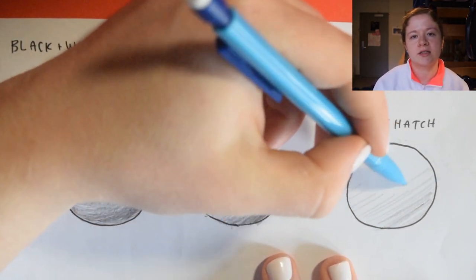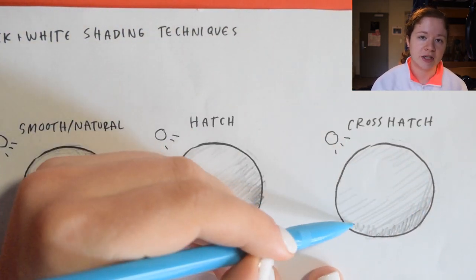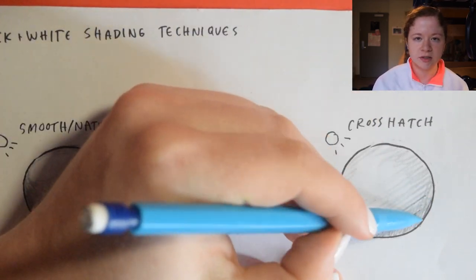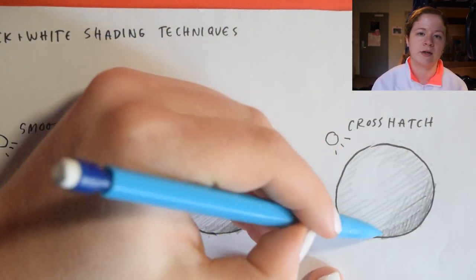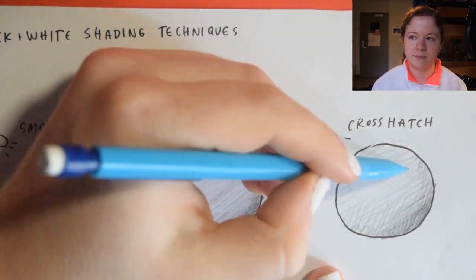And then our last example is crosshatch, which is also a really helpful technique. Basically, it's a lot like hatch, but when you want to put darker areas, you can put lines perpendicular or at an angle to the parallel ones and those make it really dark and can help darken your shadows.